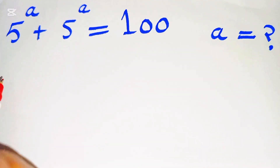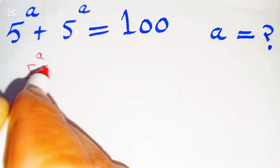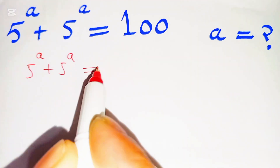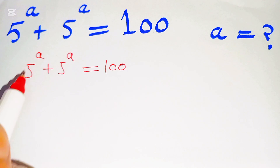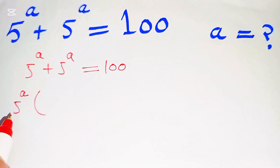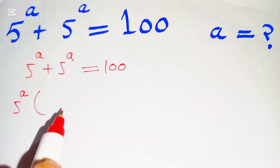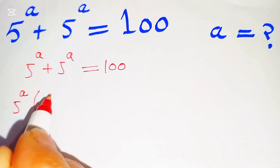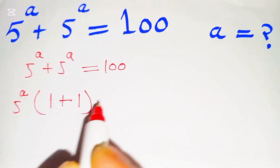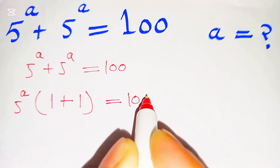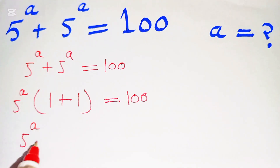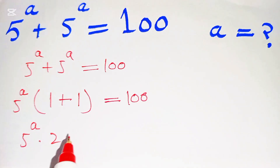First, we can write 5 power of a plus 5 power of a is equal to 100. Now we take out 5 power of a as a common factor, giving us 5 power of a times (1 plus 1) and is equal to 100.